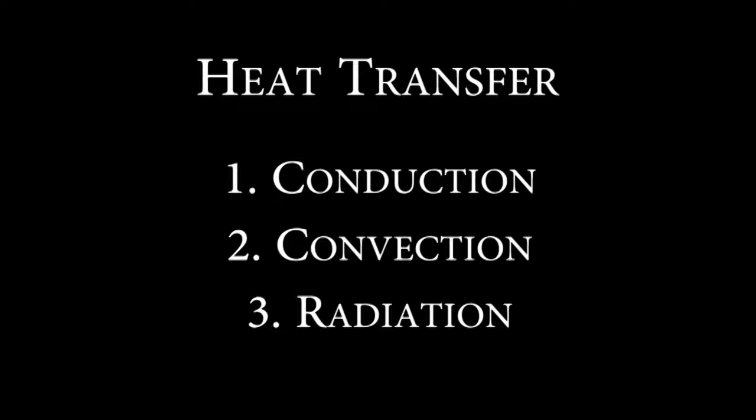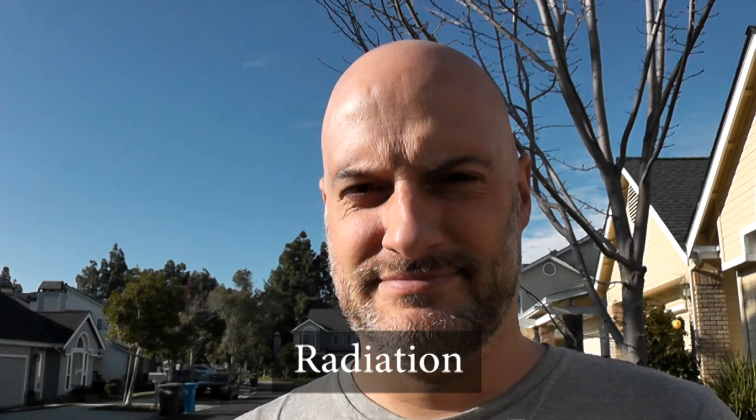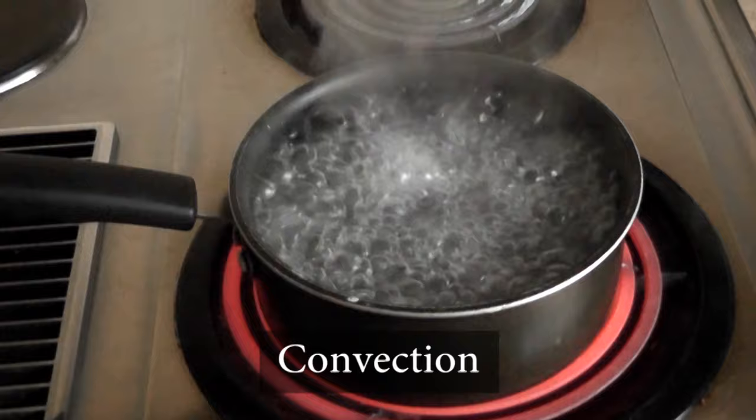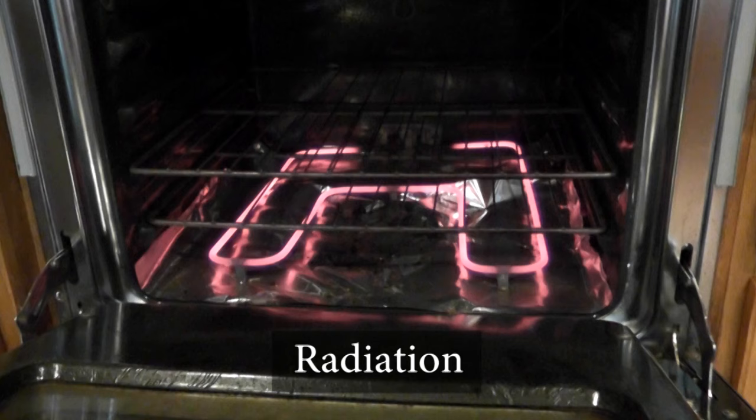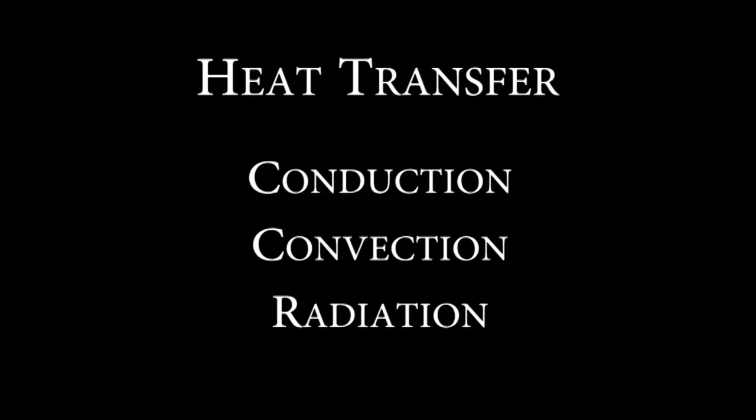Heat moves by conduction when you touch a hot metal plate, by convection when you boil a pot of water, and by radiation when you feel warm sunlight on your face. Conduction works through physical touch. Convection works by liquid and gas moving around. Radiation works by hot objects glowing and producing light. In the sun, conduction is not that important.